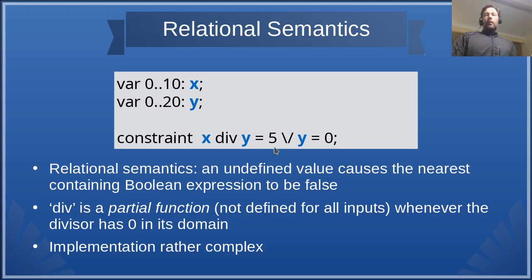First, if this happens in the model, then the resulting FlatZinc is a bit more complicated. So if you can avoid having zero in the domain of the divisor. And the second point is that the implementation of this proved to be rather complex, because when working the expression tree for each expression, you also need to keep the definedness result of that. So this is probably kind of a pitfall. The alternative is strict semantics.